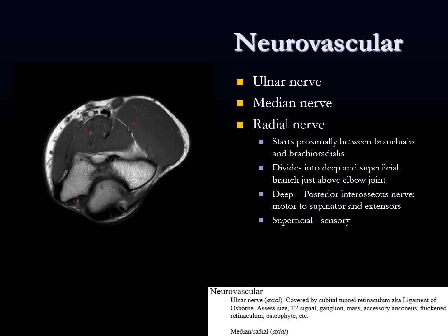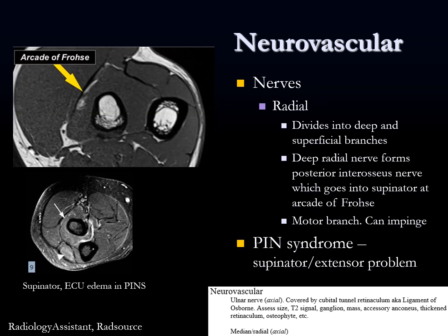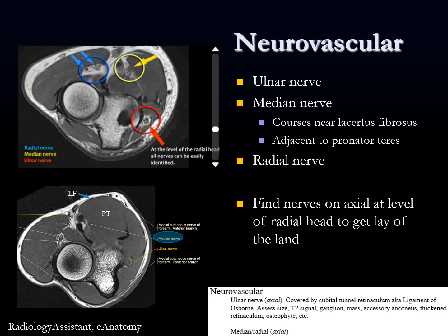The radial nerve can branch into the posterior interosseous nerve and give posterior interosseous nerve (PIN) syndrome — beyond the scope of this lecture, but useful as a springboard to learn more. Here's the anatomy of the deep radial nerve becoming the posterior interosseous nerve, diving into the supinator. If you get edema in the supinator and extensor carpi ulnaris, that's posterior interosseous nerve syndrome. The median nerve is near the lacertus fibrosus and pronator teres.